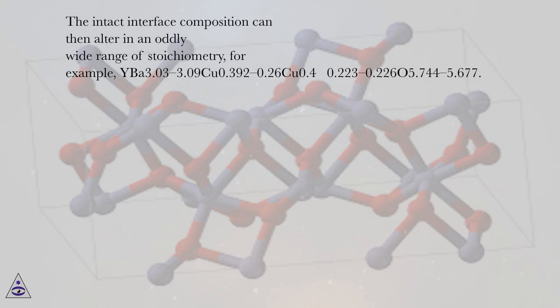The intact interphase composition can then alter in an oddly wide range of stoichiometry. For example, YBa3.03-3.09Cu0.39-0.26Ca0.40-0.22O5.74-5.67.